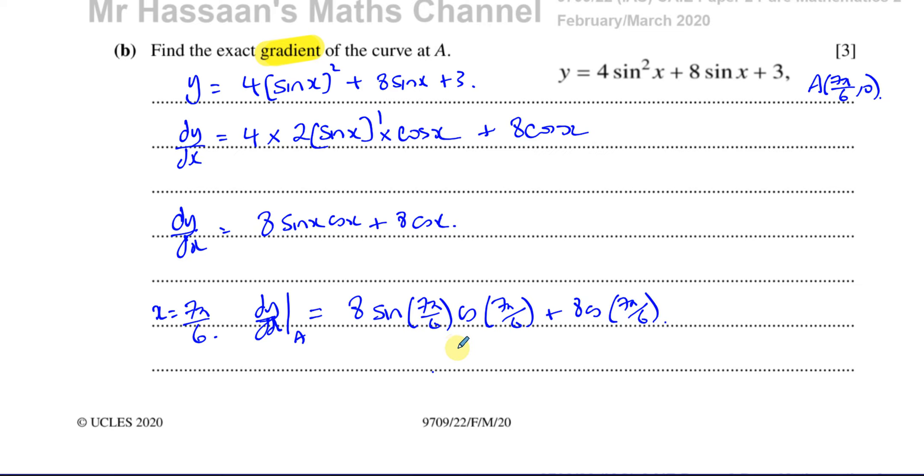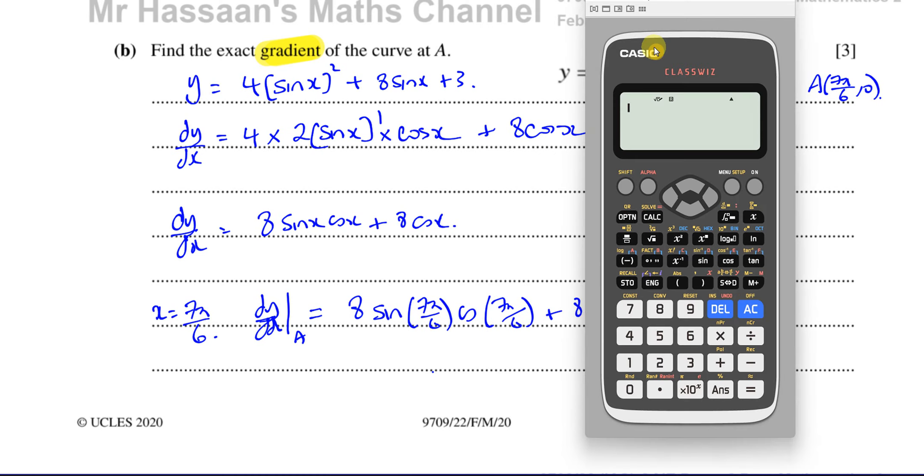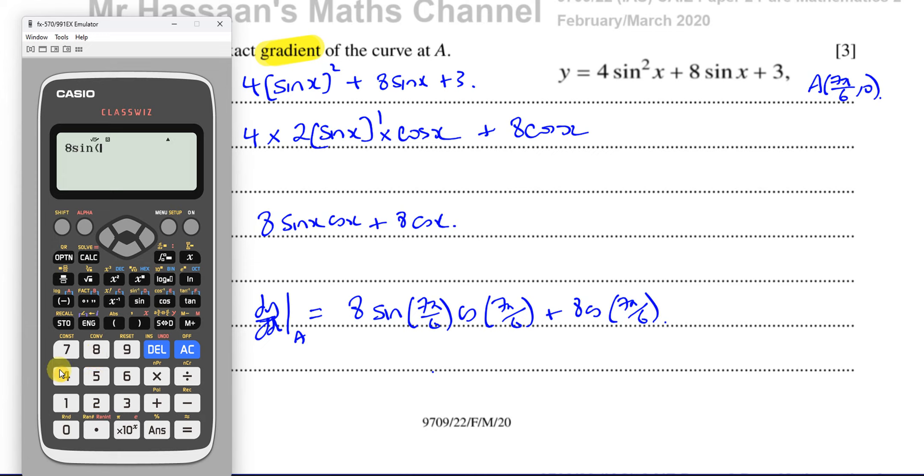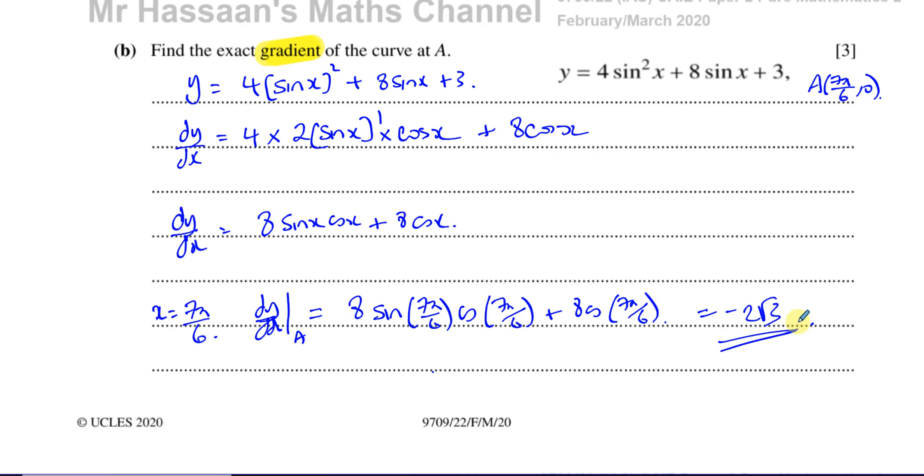So we can work out what this is going to give us. Let's work that out. We have to be in radian mode, which we are. So we have 8 times the sine of 7 pi over 6, times the cosine of 7 pi over 6, plus 8 times cosine of 7 pi over 6. And that should give us an answer, which is negative 2 root 3. So there's the answer to part B.